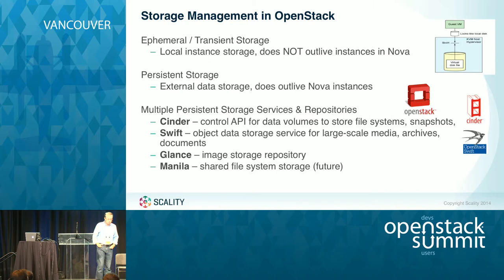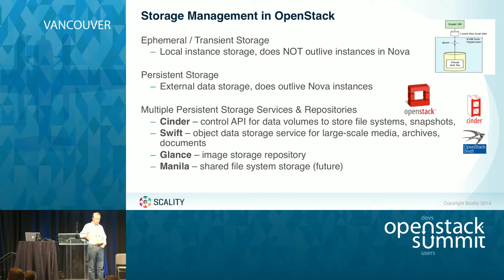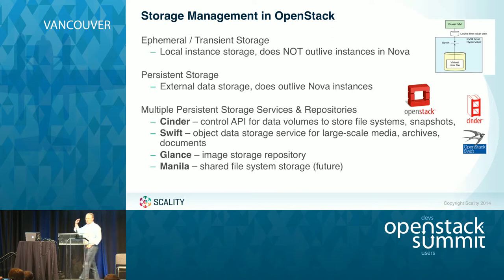Swift is the larger scale, very scalable petabyte scale object store — a perfect fit for things like media data and long-term archives. There's also the Glance service where you want to maintain your library of images: operating system images, flavors you want to spin up, and even application stacks like common databases. There's also a lot of talk here at the summit about Manila, which is the upcoming shared file service. So you can see there are already four different services and projects related to persisting storage in OpenStack.